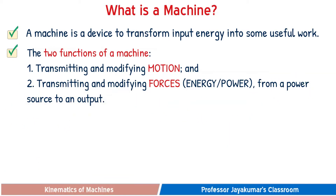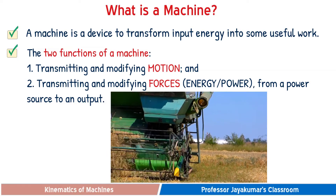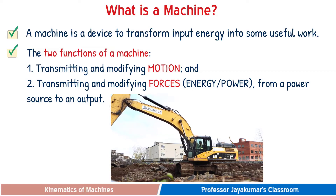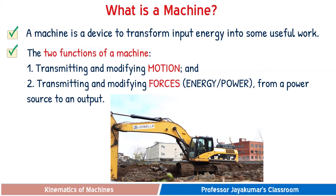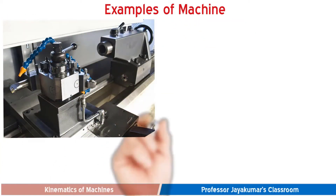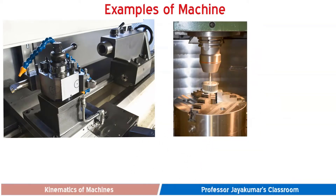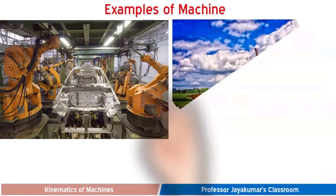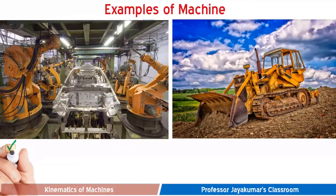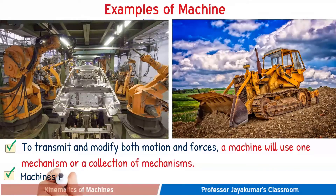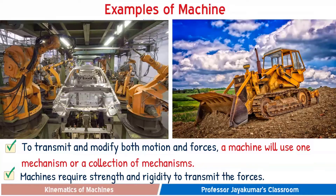A machine does two functions: one is transmitting and modifying motion, and the second is transmitting and modifying forces, energy, and power from a power source to the output application. So a machine has to transmit and modify motion as well as forces. Examples include lathe machines, drilling machines, shaper and planer machines, sewing machines, robots used in automotive industries, and construction equipment such as tractors and excavators. A machine uses one or more mechanisms and requires strength and rigidity to transmit forces.